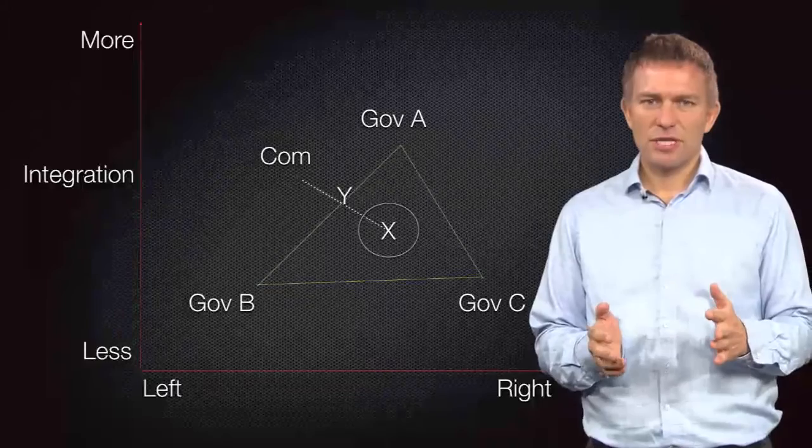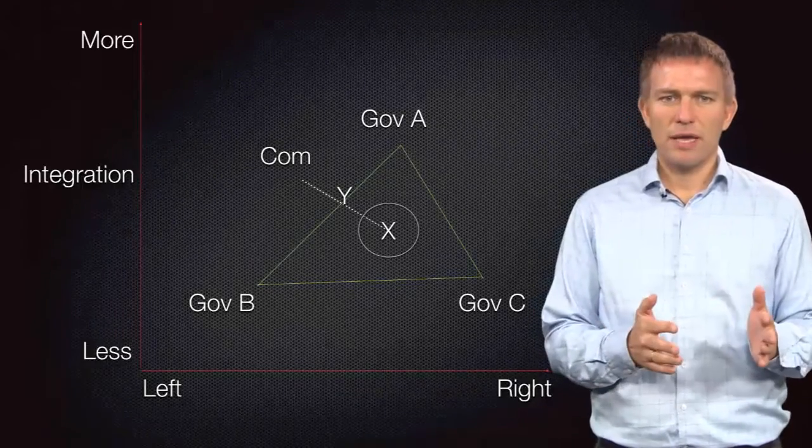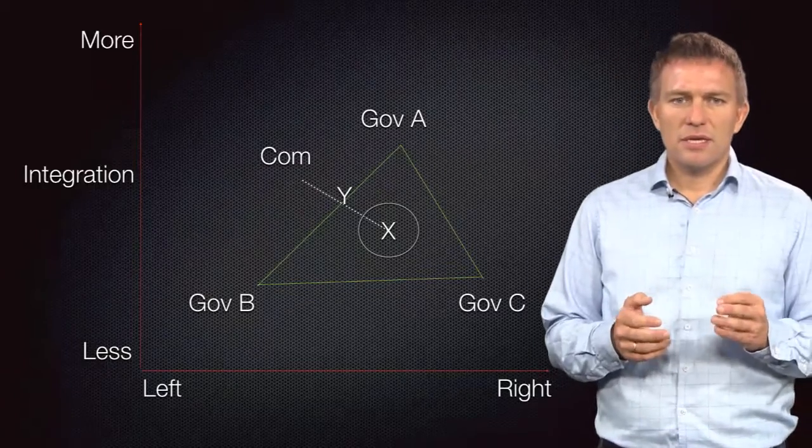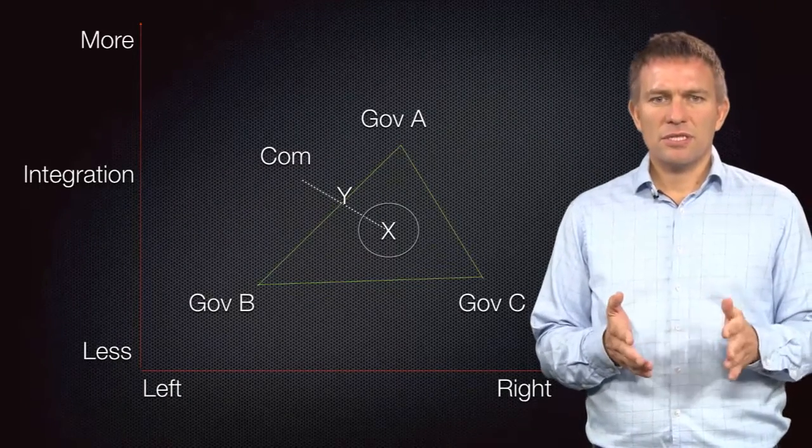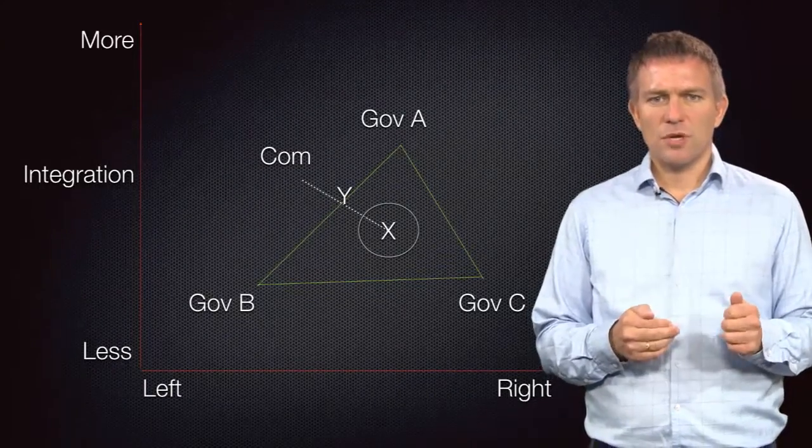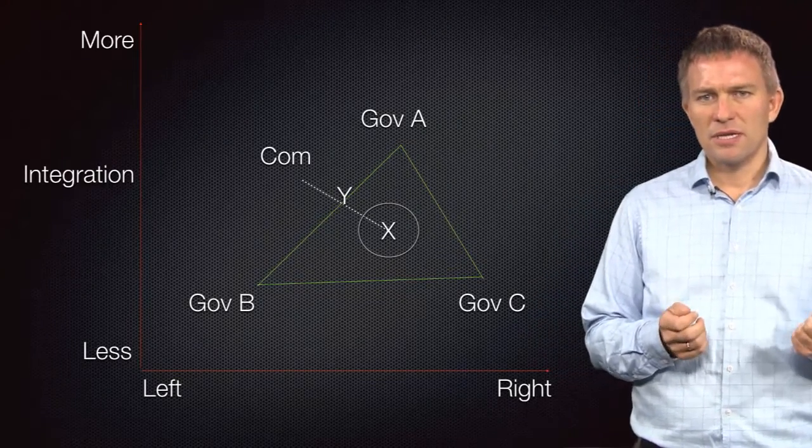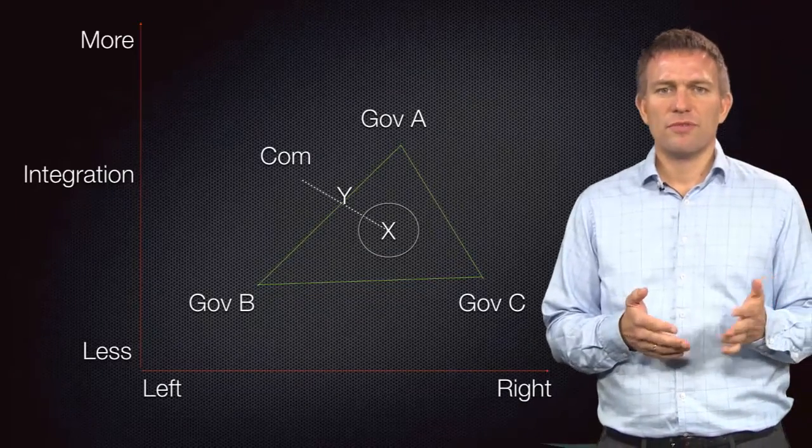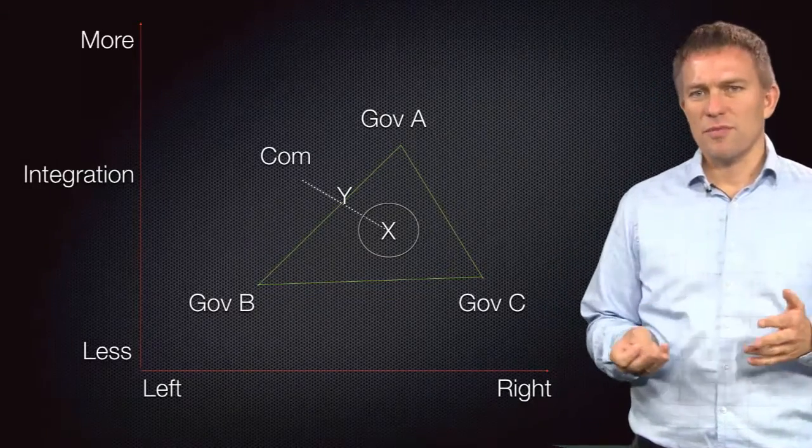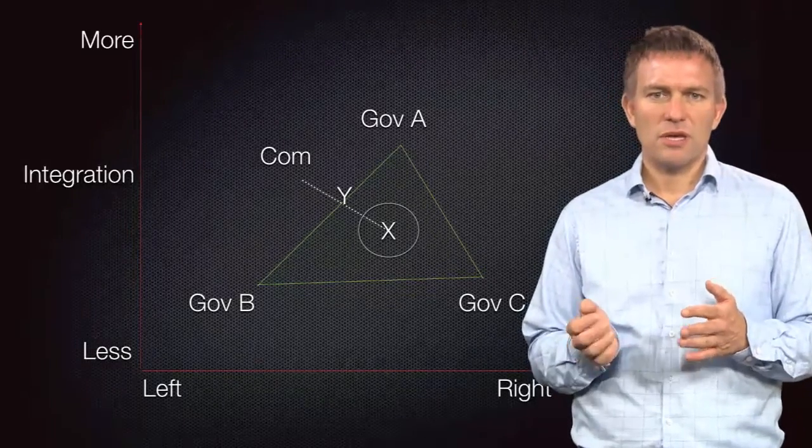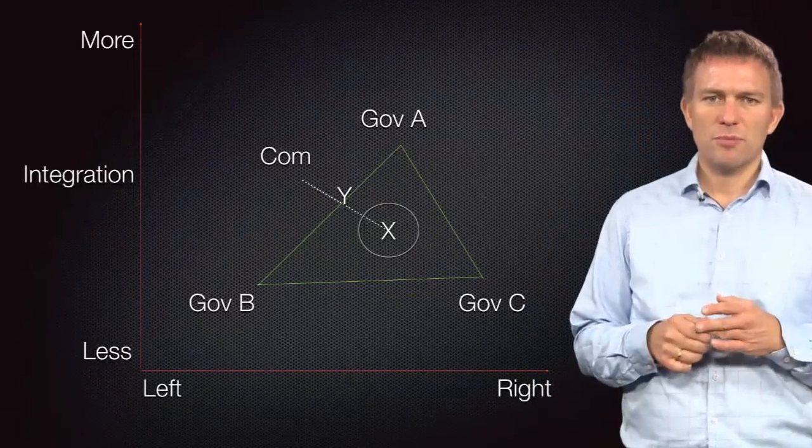Government C is worried that the commission might want to implement Y with its support from the other governments. She will thus insist on some control mechanisms. Effective mechanisms for reducing drift are costly, and the other governments are not particularly interested in funding such measures. After all, they would benefit from some agency drift.